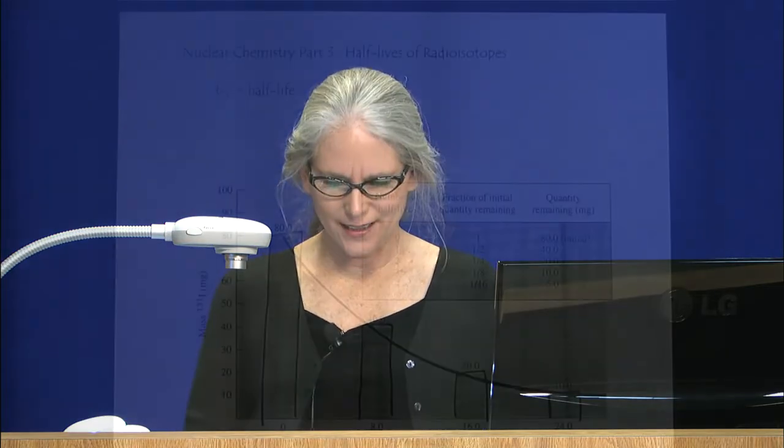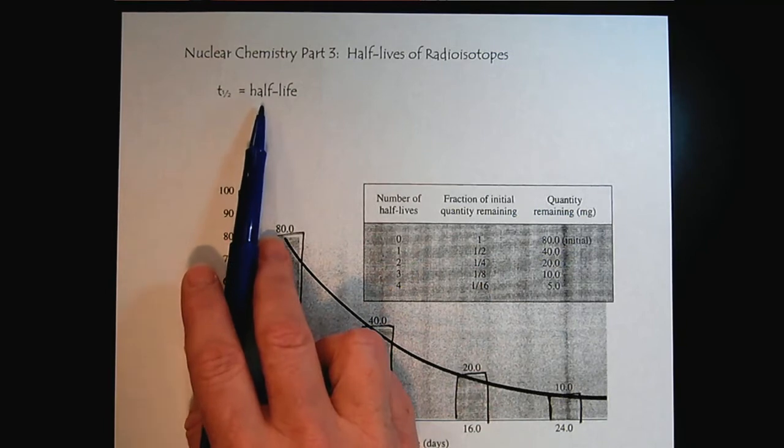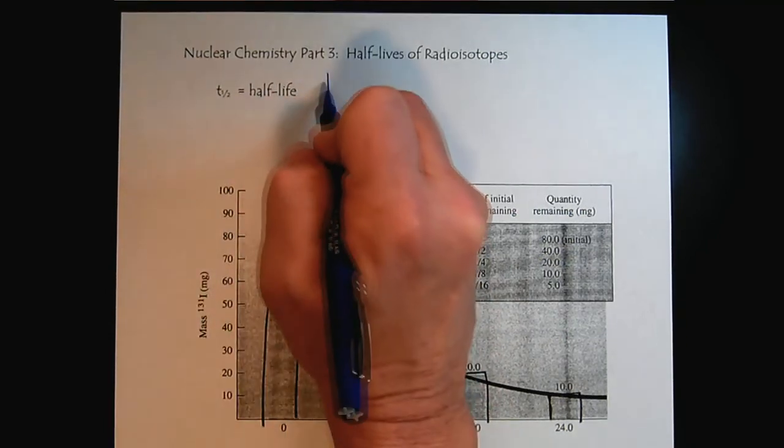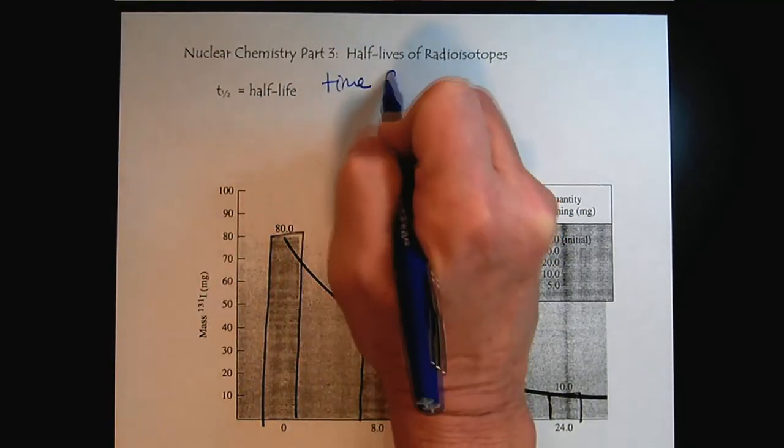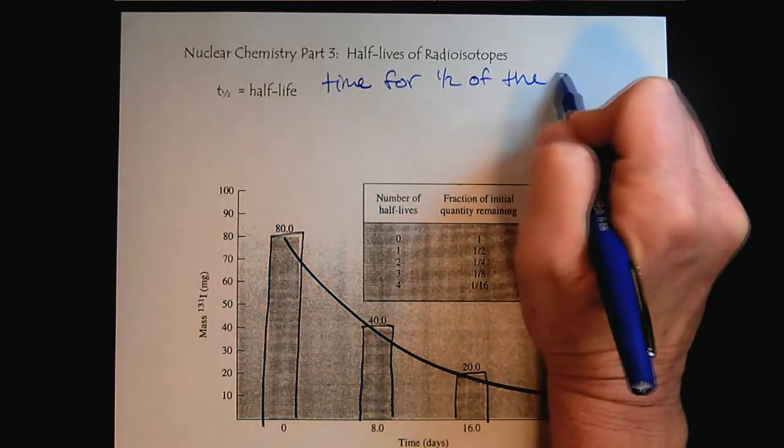Welcome to nuclear chemistry part 3. Now that we're familiar with the different types of radioactive decay, it's important to learn about half-lives because not everything decays at the same rate. Let's get started. So the half-life is a very literal term. It's the time for one half of the sample to decay.